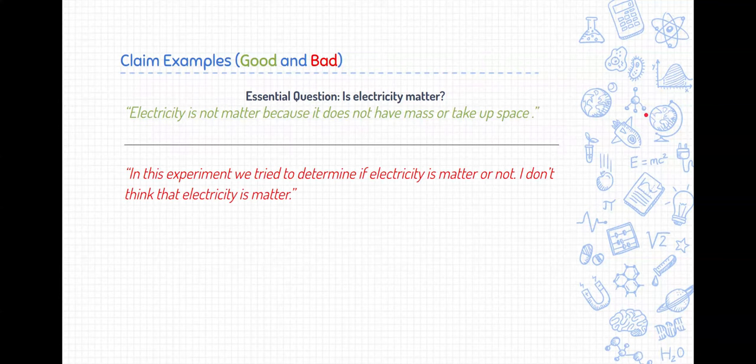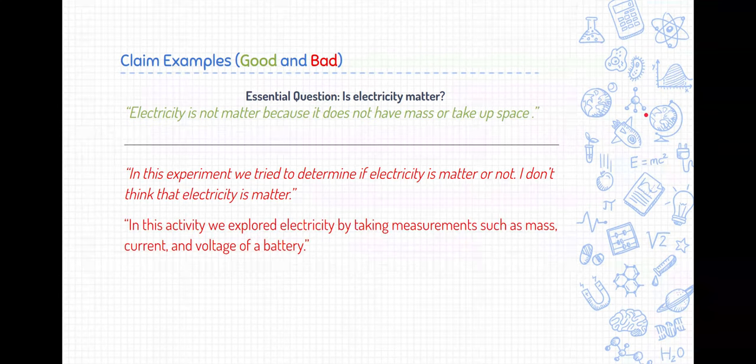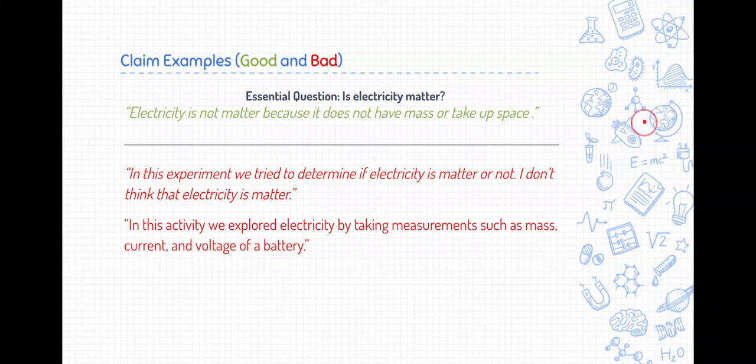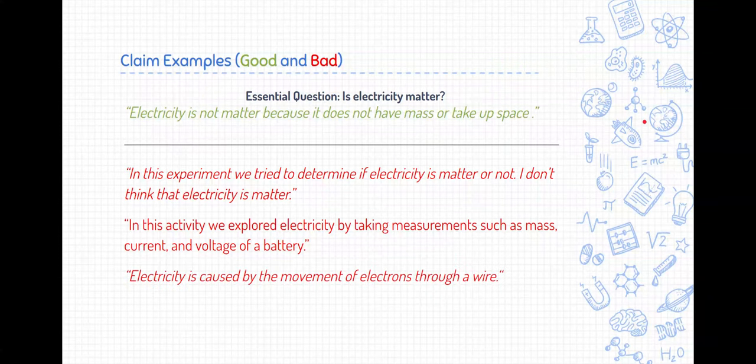Alright, so here's some bad examples. Now, this first example right here isn't that great. It's kind of wishy-washy. I don't really like it as a teacher because I don't like the word think. I don't think that electricity is matter. Why don't they just state that electricity is not matter? Also, there's a lot of extra words and statements in here that aren't really needed. A lot of this might be better off in a different like either evidence or reasoning statement. This next one isn't a claim at all. It's more what they did in the experiment and so this is not really helpful here. It's not claiming an answer to that essential question. Now, the last one is a definition of electricity and we have the same problem. It's not really claiming if electricity is matter or not. It's just defining electricity.